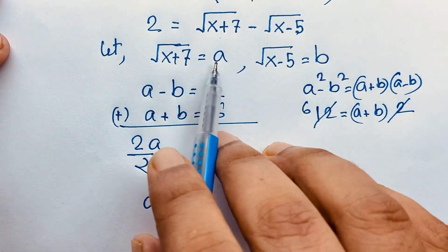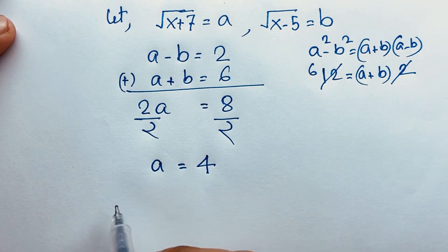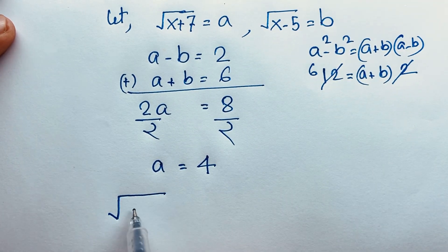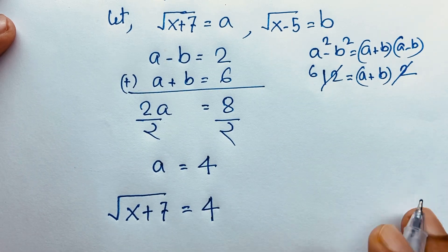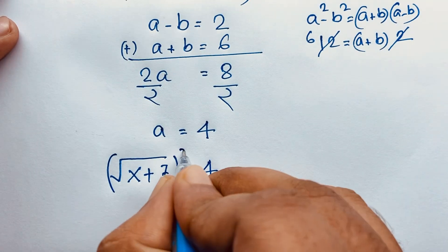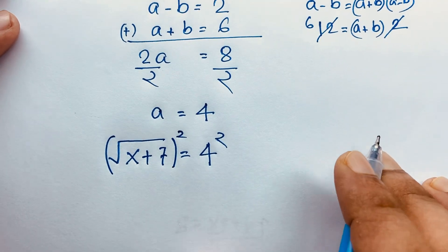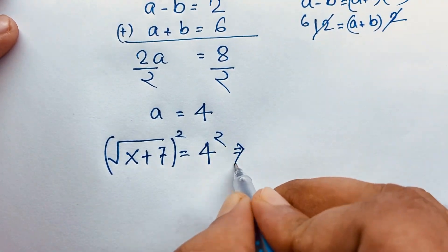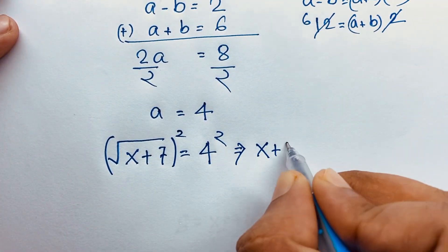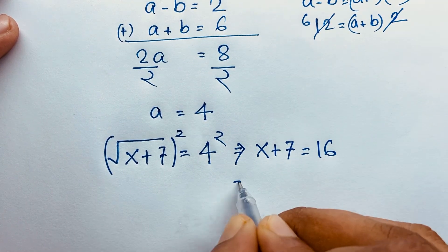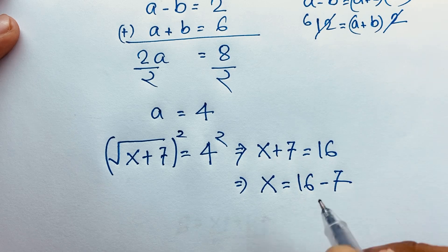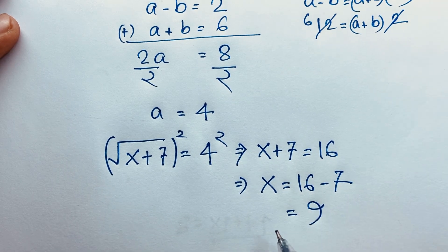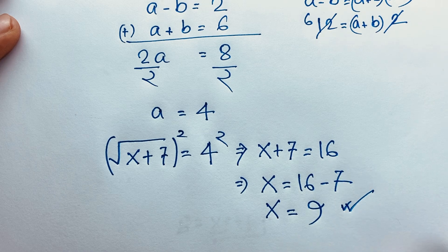Remember that a is equal to √(x+7). So: √(x+7) equals 4. Now I square both sides — the square root is cancelled — and we find x plus 7 equals 16. Then x equals 16 minus 7, which gives x equals 9. So we find our final answer: x is equal to 9.